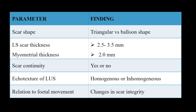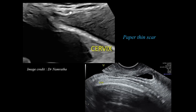In summary, the parameters to assess are: scar shape — ideally triangular with no ballooning; lower segment scar thickness — 2.5 to 3.5 mm or more is acceptable; myometrial thickness — about 2 mm is ideal; scar continuity — absence indicates rupture and the patient will already be in severe hypovolemic shock; echo texture of the lower uterine segment; and behavior during fetal movement, as pressure from the fetus can cause transient ballooning that should also be noted.